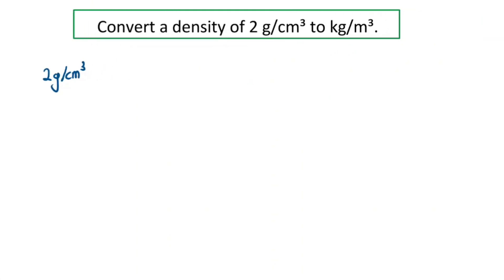Hi everybody! In this video, we'll learn how to convert a unit for density from grams per cm³ to kg per m³. Let's use this example here to illustrate: we are going to convert a density of 2 g/cm³ to kg/m³.